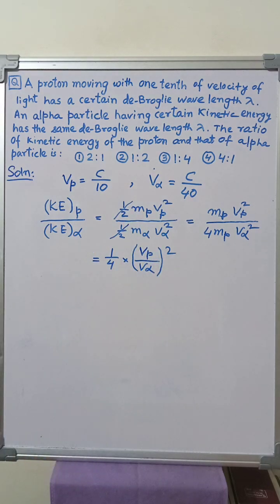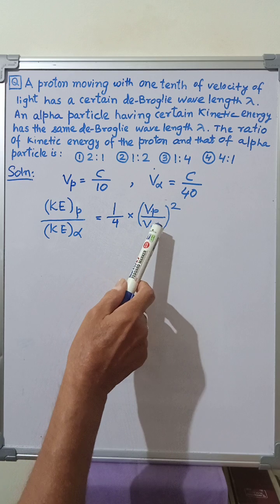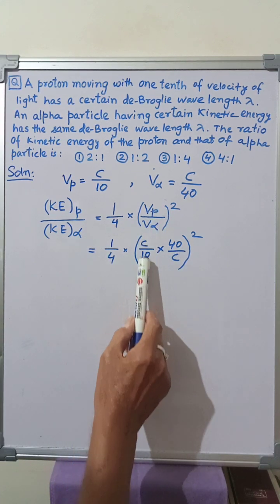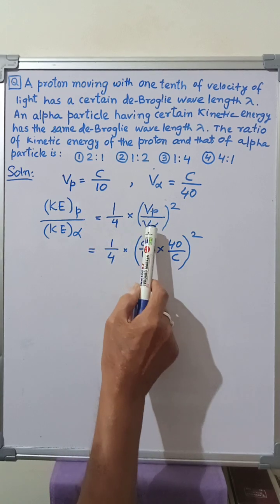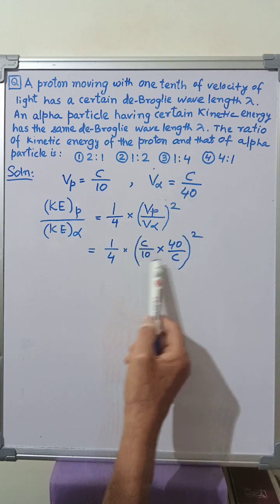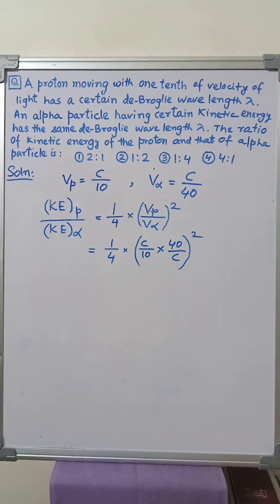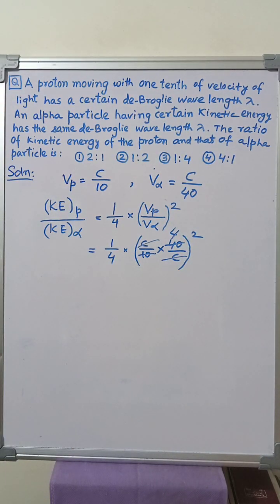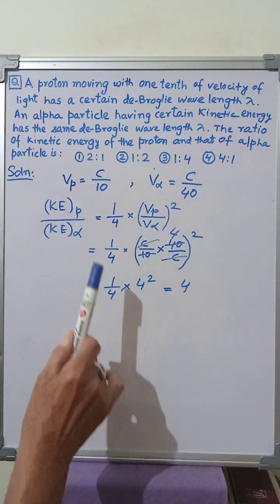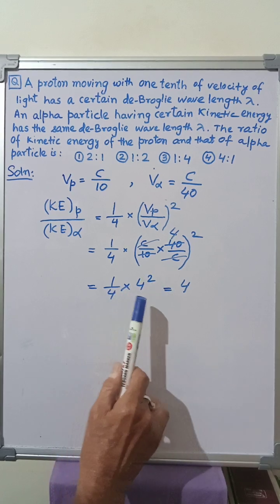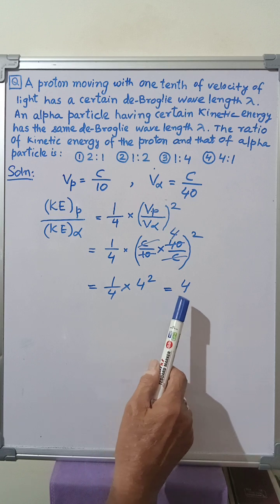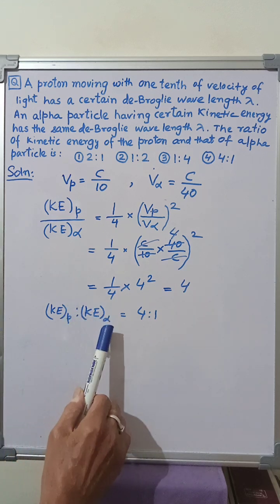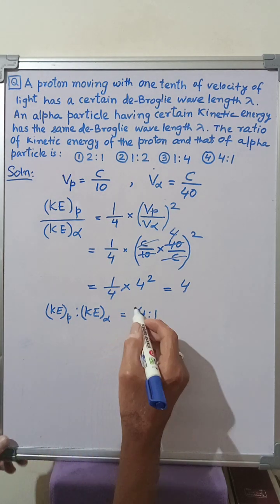Now putting the values: v_p equals c by 10 and v_alpha equals c by 40, we get 1 by 4 times (c/10 divided by c/40) whole squared, which equals 1 by 4 times (c/10 times 40/c) whole squared. Here c cancels with c and 10 cancels with 40 giving 4, so the ratio equals 1 by 4 times 4 squared. Cancelling one factor of 4, the ratio equals 4. Therefore the ratio of kinetic energy of the proton to kinetic energy of the alpha particle is 4 to 1, and the correct option is 4.